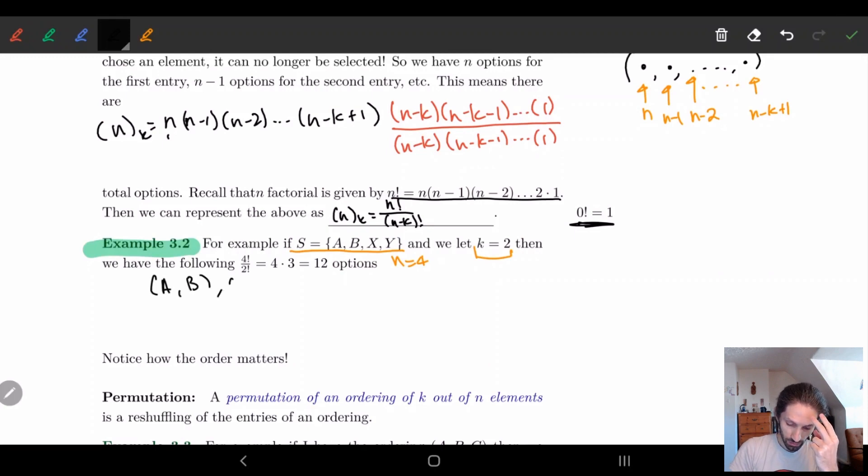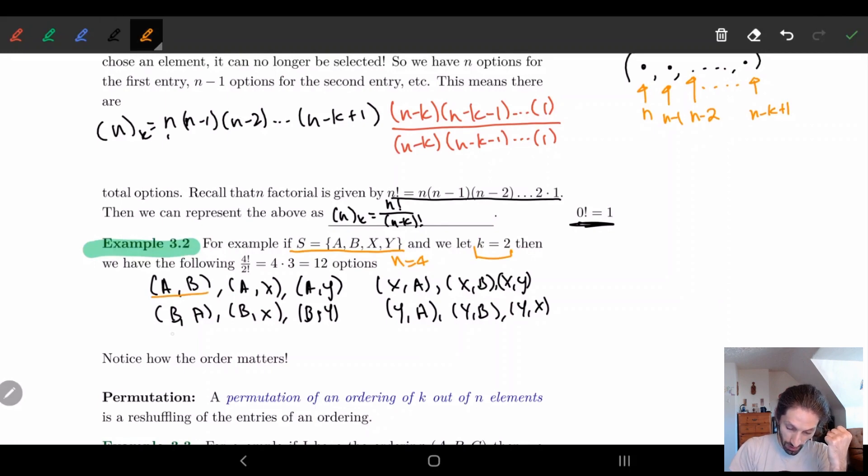So in this case, we're going to look at sequences of two elements where no two are the same. So if I put a here, I can either put a b, I can put an x, or I can put a y. If I start off with b, I can either have a, I can have x, or I can have y. I can't repeat the entries. If I start off with x, I can have xa, xb, or xy. And if I start off with y, I can have ya, yb, or yx. And so notice how the order matters. A, b and b, a are not the same thing. And let's double check we have all the elements. So here, I kind of already wrote it down, but we want four factorial divided by two factorial. So we have four times three times two times one divided by two times one. So these cancel, and we have four times three, which is 12. And here we have 12. So this is where the order matters and why these are called orderings, because we care about the order. This is an ordered list.